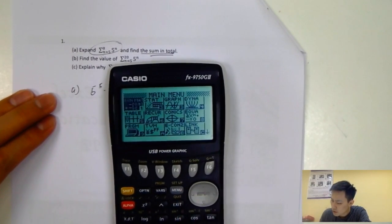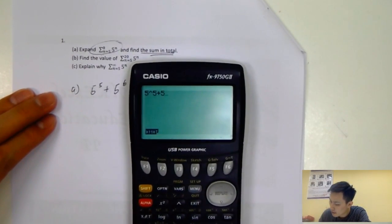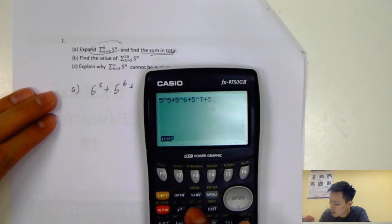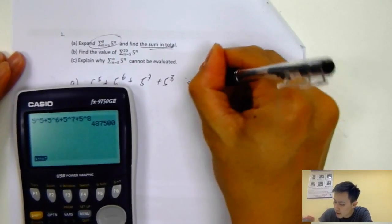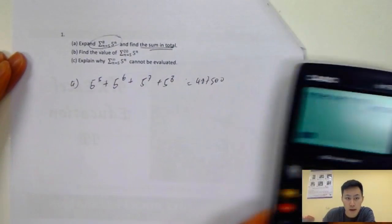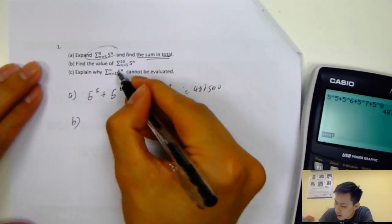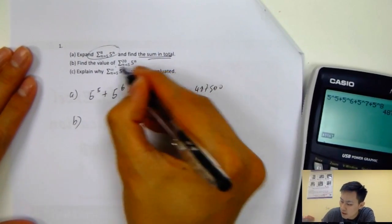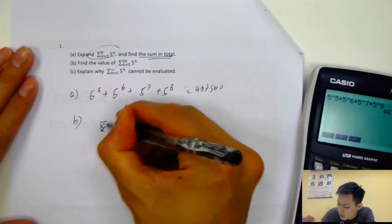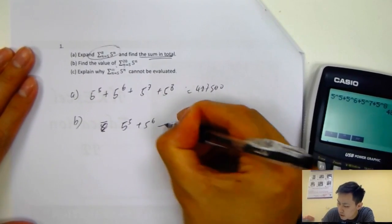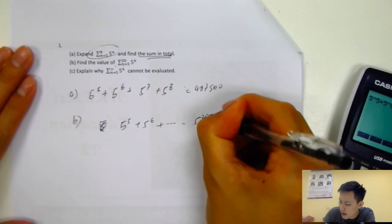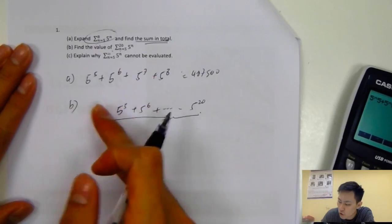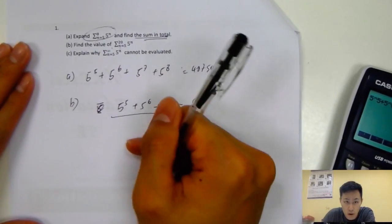So 5 power 5, plus 5 power 6, plus 5 power 7, plus 5 power 8 gives a very large number: 487,500. For part B, find the value of the sum from n equals 5 to 20 of 5 to the power n. We expand a bit to see the pattern: 5 power 5 plus dot dot dot to 5 power 20. Obviously you don't want to type all that into your GDC because there are so many terms, so we'll use the equation for the sum.